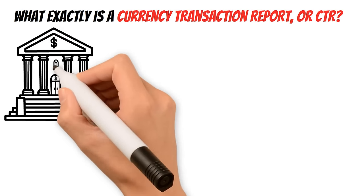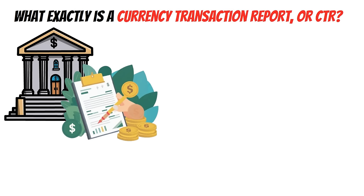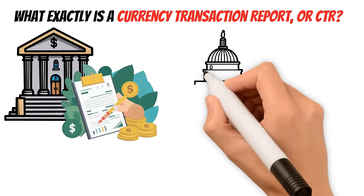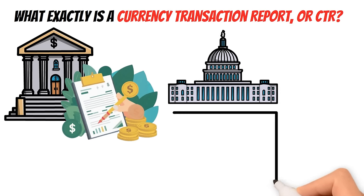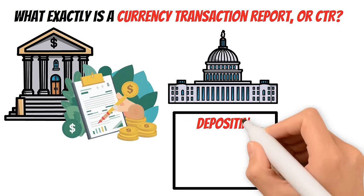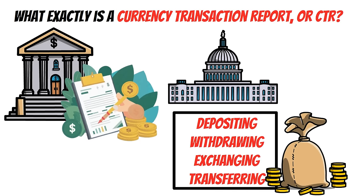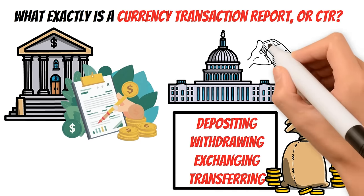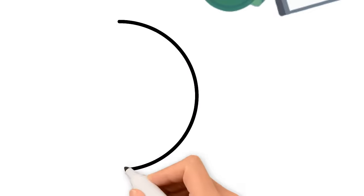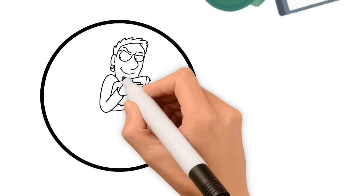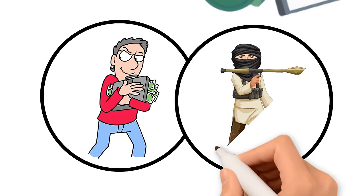It's a document that financial institutions use to report cash transactions over a certain threshold to the government. Whether you're depositing, withdrawing, exchanging, or transferring large amounts of cash, banks are required to file a CTR to help prevent financial crimes like money laundering and terrorist financing.